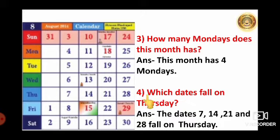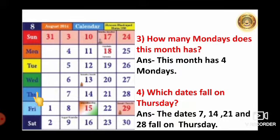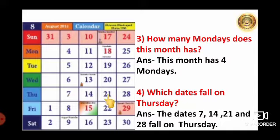Fourth question: which dates fall on Thursday? Where is Thursday? Which dates can you see on Thursday? This line is of Thursday. So 7, 14, 21, and 28 fall on Thursday.